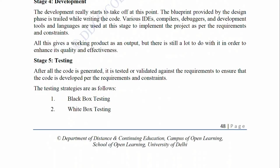Stage 4 — Development: The development starts to take off at this point. The blueprint provided by the design phase is followed while writing the code. Various IDEs, compilers, debuggers, and development tools and languages are used at this stage to implement the project as per the requirements and constraints. All this gives a working product as an output, but there is still a lot to do in order to enhance its quality and effectiveness.